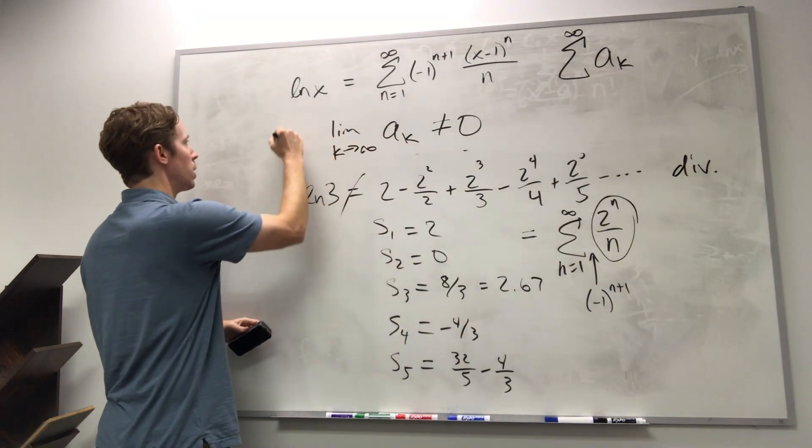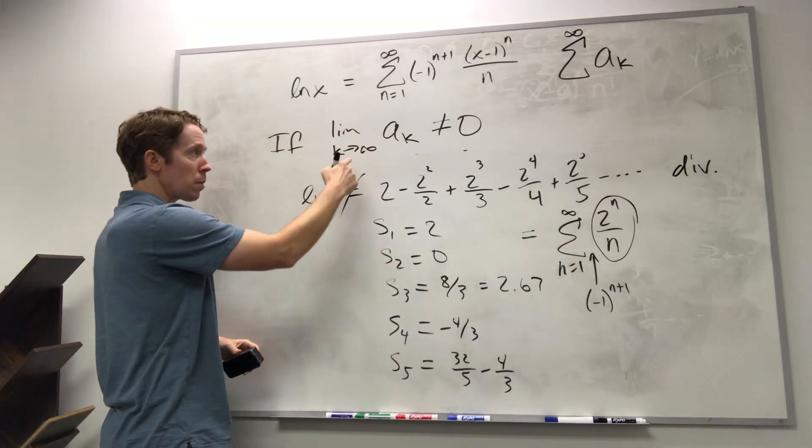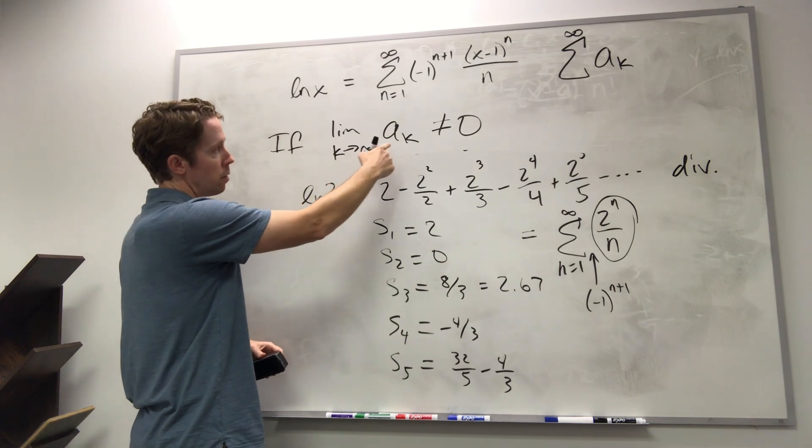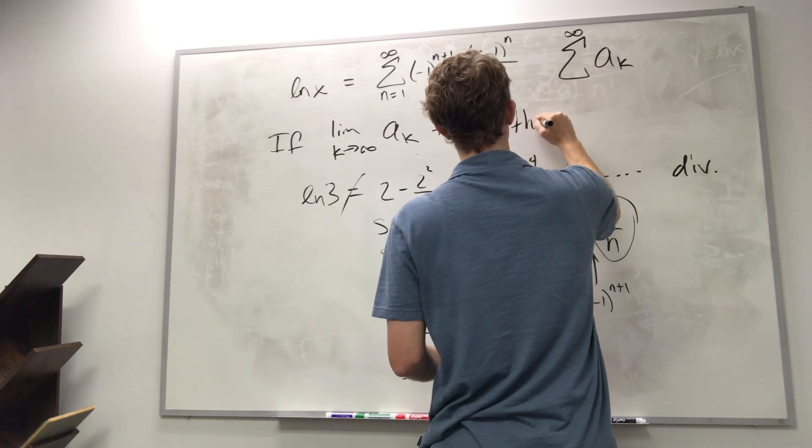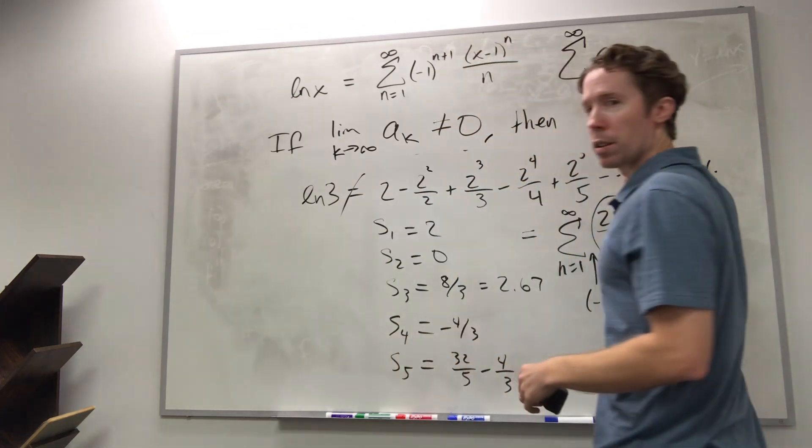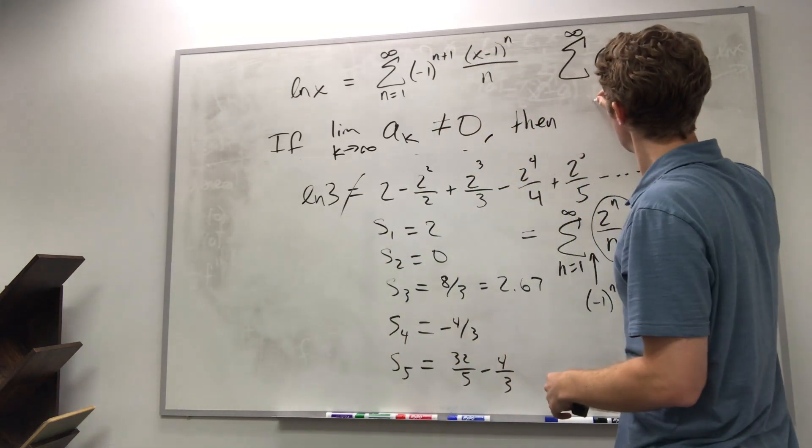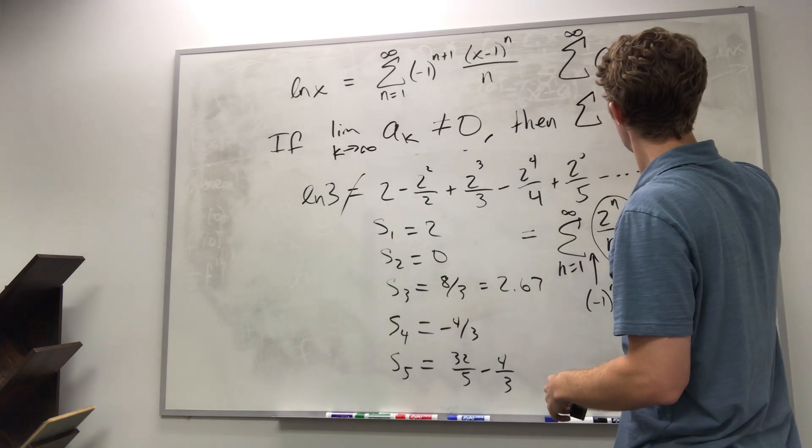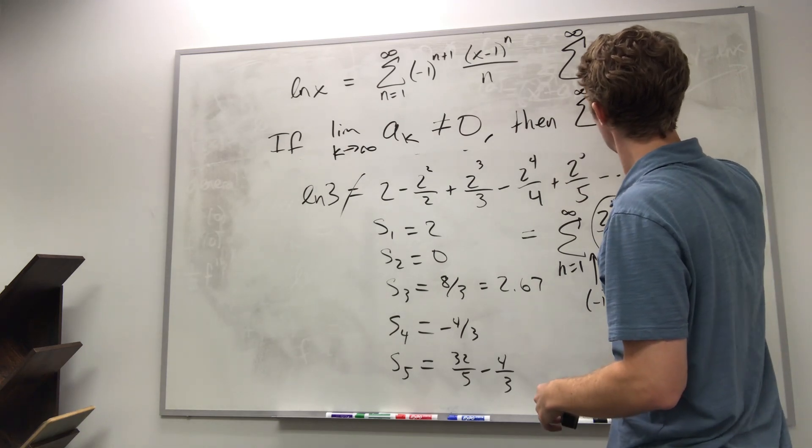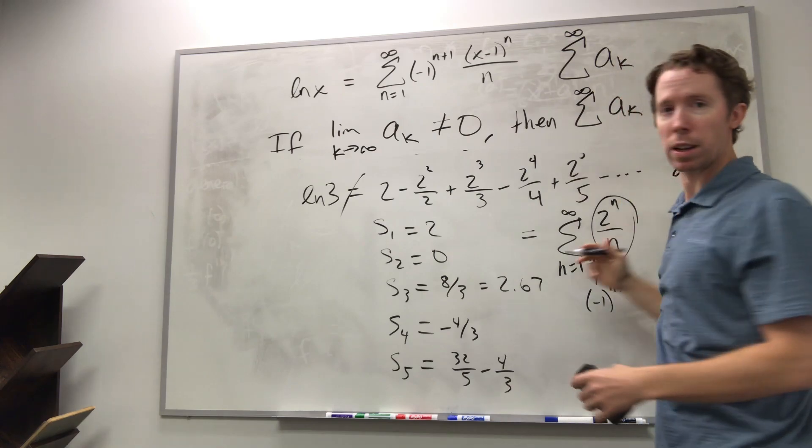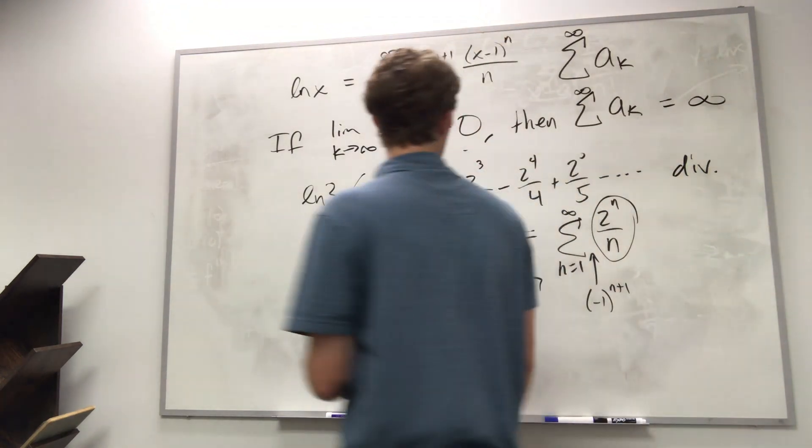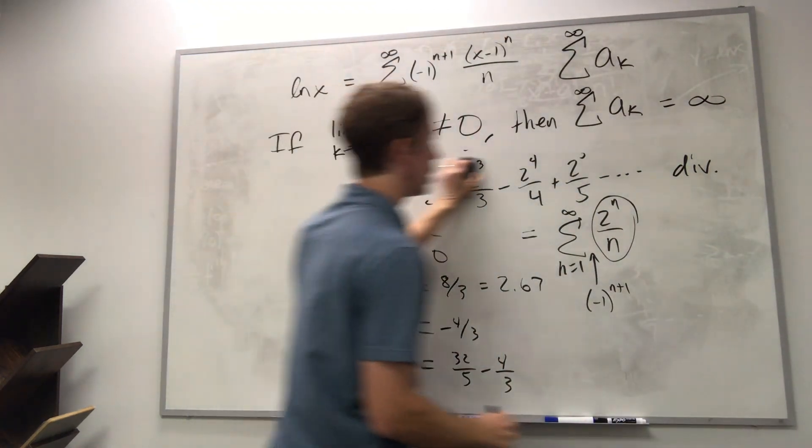So if this is the case, if the limit of the terms is not zero, then the series is divergent.